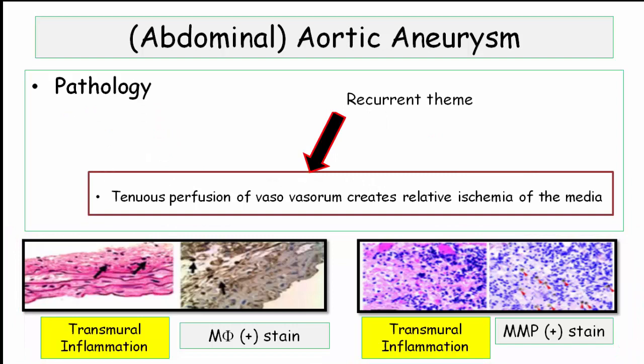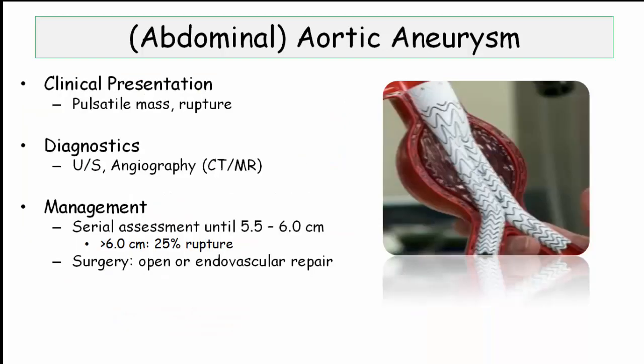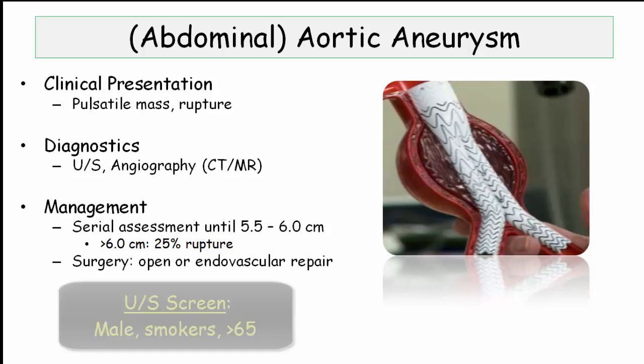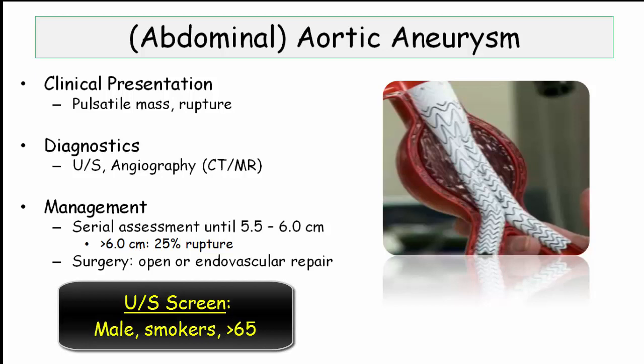It is worth noting that poor perfusion of the vasa vasorum contributes to vessel breakdown by creating a relatively ischemic state — this will become a recurrent theme. The clinical presentation for abdominal aneurysm will include a palpable or pulsatile mass. They can certainly rupture with catastrophic consequences, but this hasn't been a major focus for the boards. Diagnosis is made through imaging modalities including ultrasonography or angiography. A one-time screen is recommended for male smokers at the age of 65.